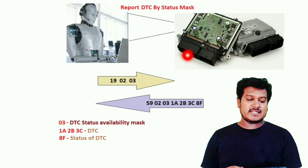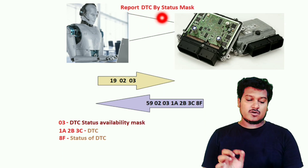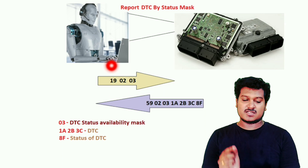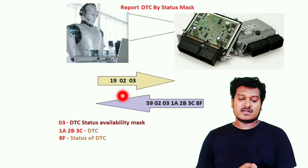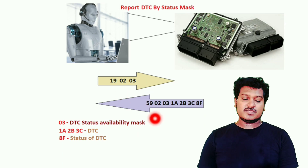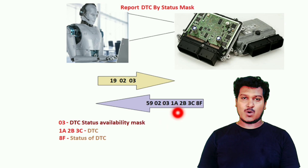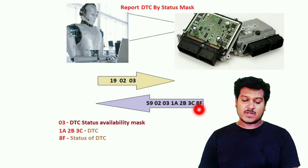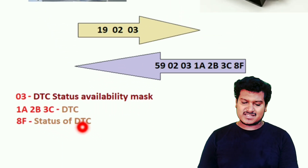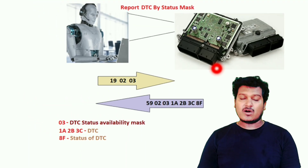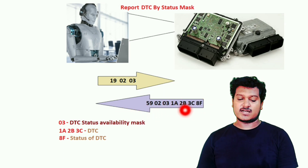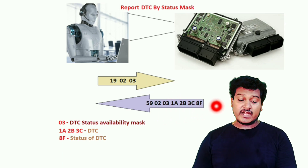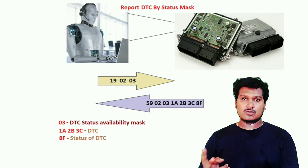For sub-function 0x02, 'Report DTC by Status Mask,' the request is 19 02 03, where 0x03 is again the DTC status availability mask. The positive response is 59 02 03, followed by 1A 2B 3C — which is the actual DTC stored at the time of the request — and 8F, which is the status of that DTC. So 0x03 is the status availability mask, 1A 2B 3C is the DTC, and 8F is the DTC status.